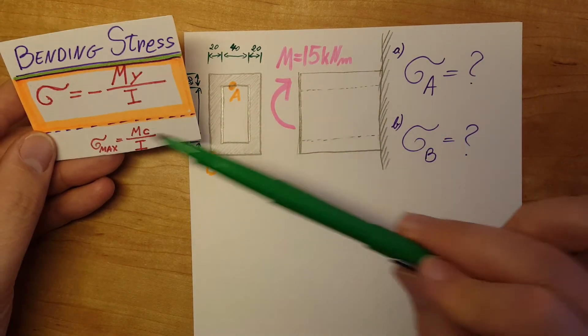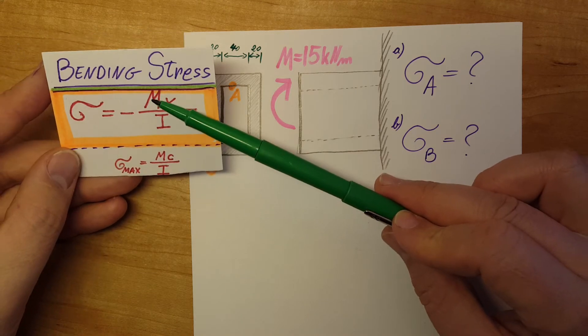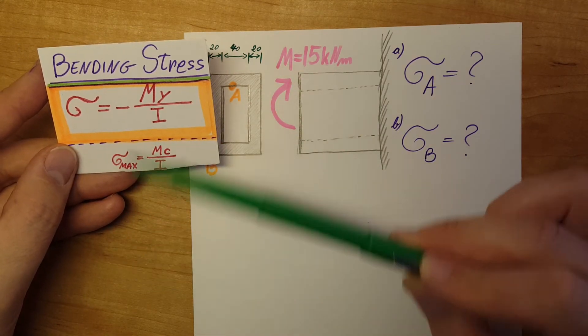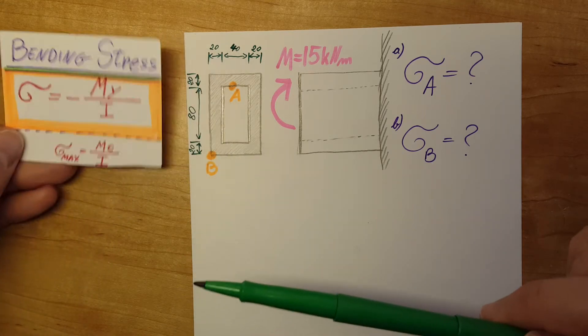To get started, we can see that the M we have, but Y and I we do not have, so let's get to work on calculating those first.